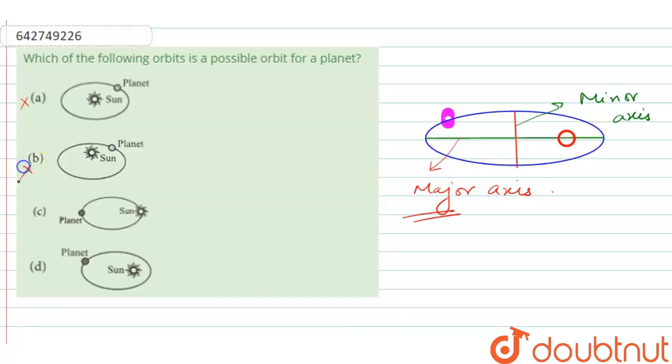So option B is also wrong. In option C, the Sun is situated in the elliptical orbit itself. This is also wrong. Option D: yes, the Sun is situated on the major axis. So option D is correct for this question.